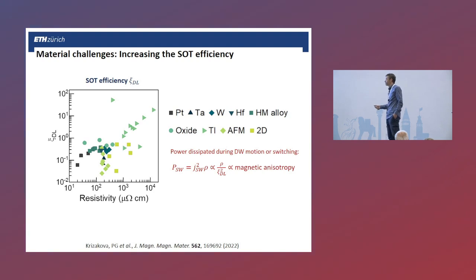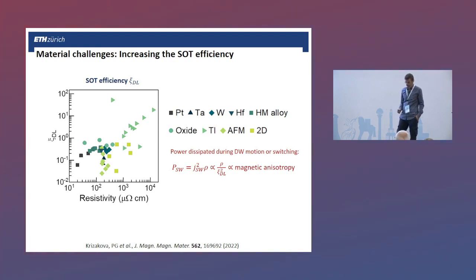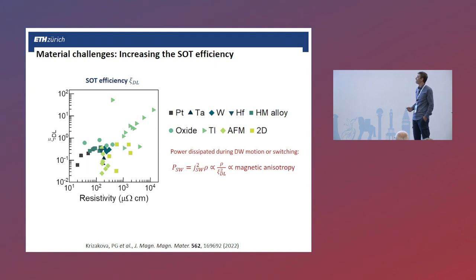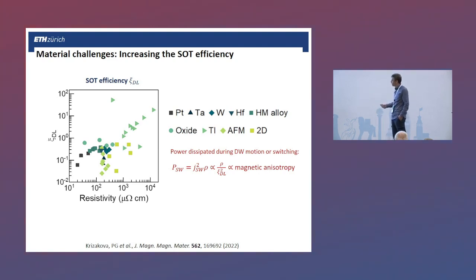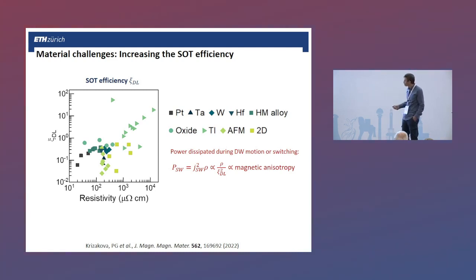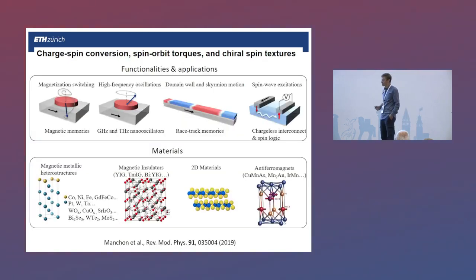An important challenge is that to improve these systems, we need materials where the spin-orbit torque efficiency — essentially the spin Hall angle — has to increase. Not only must it be large, but it must be large in materials with low resistivity, because the power required to move domain walls or switch is proportional to current squared times resistivity. Heavy metals and topological insulators occupy different positions in this trade-off, and ideally we would like to find materials that combine both large spin Hall angle and low resistivity.